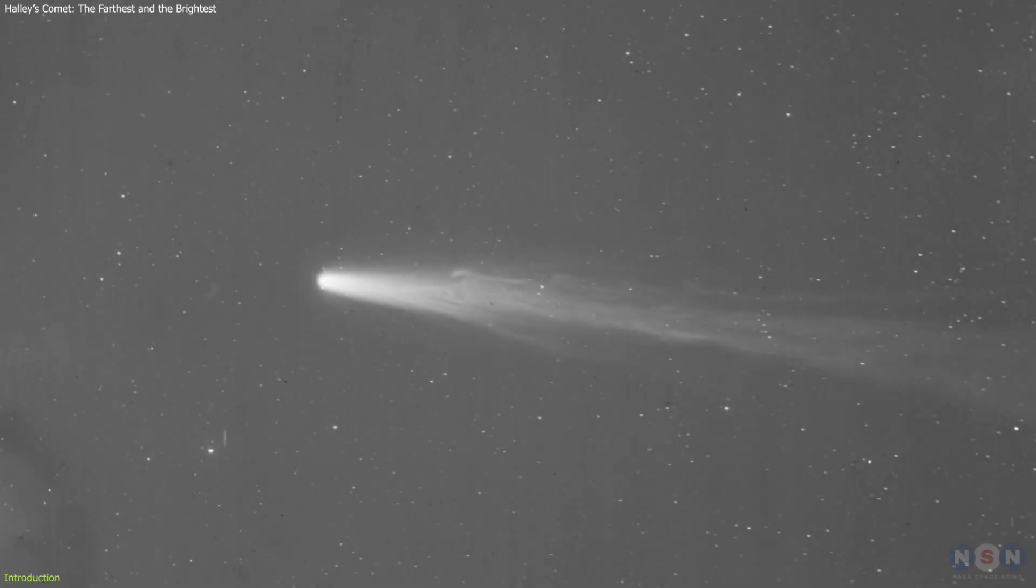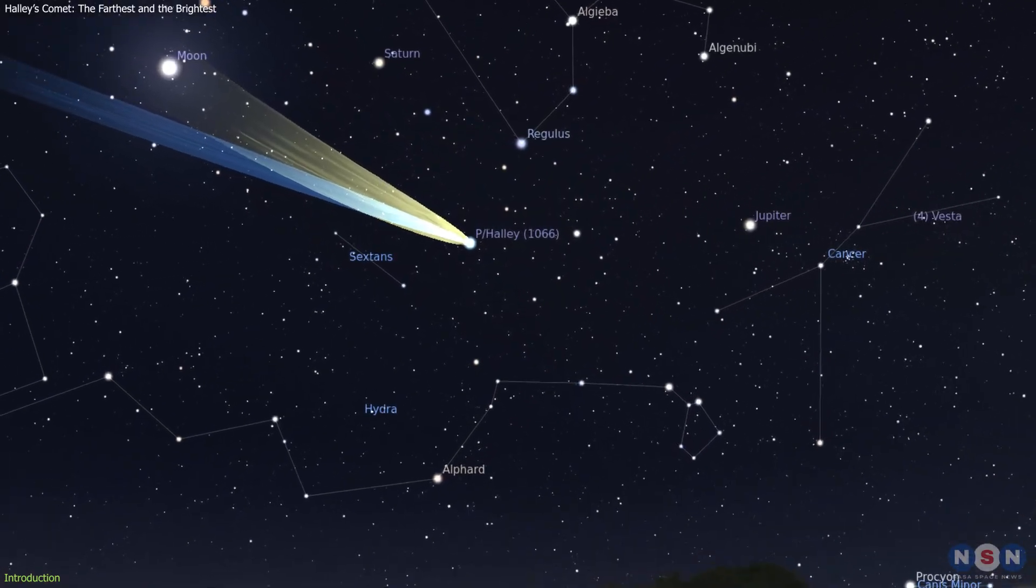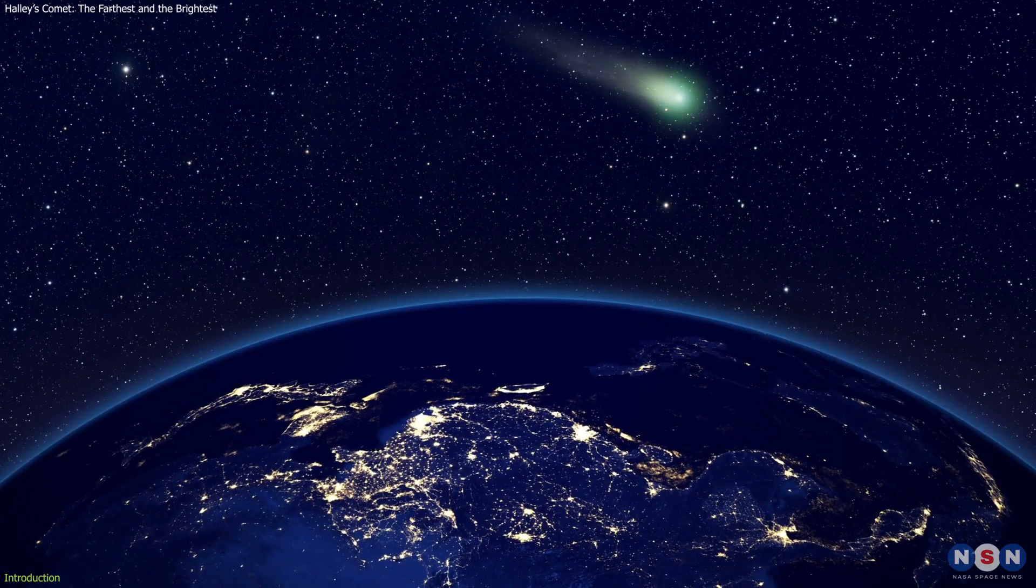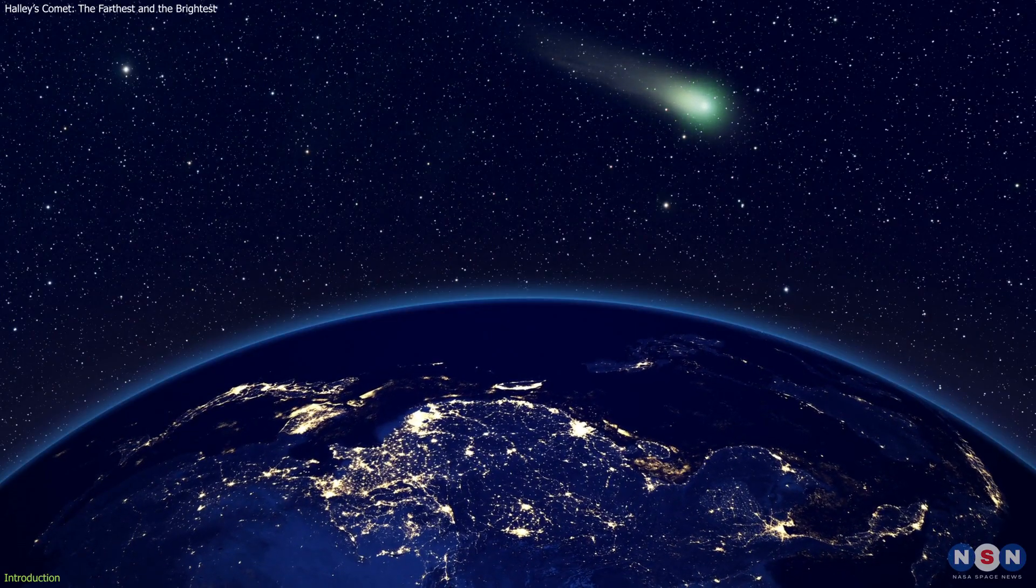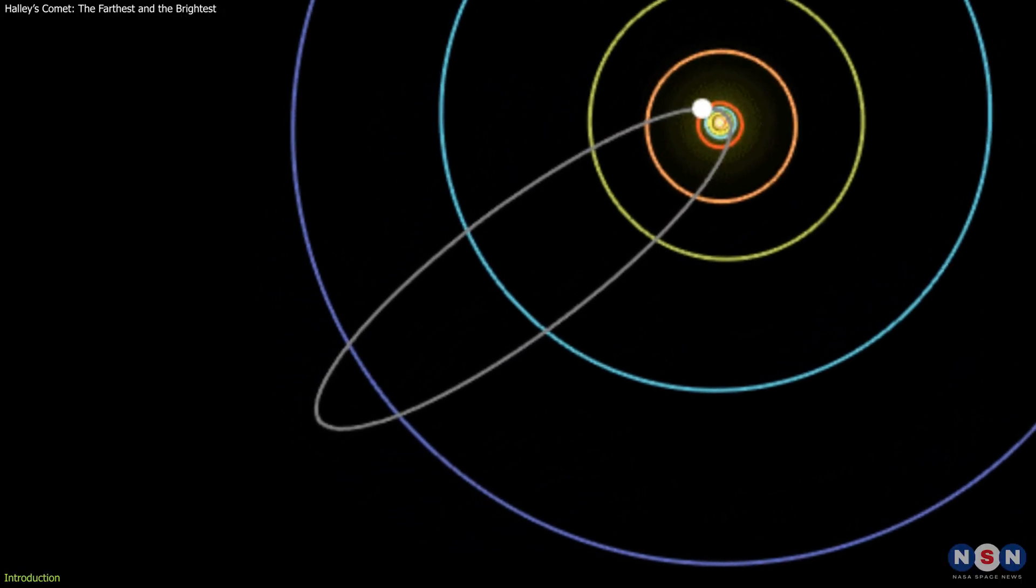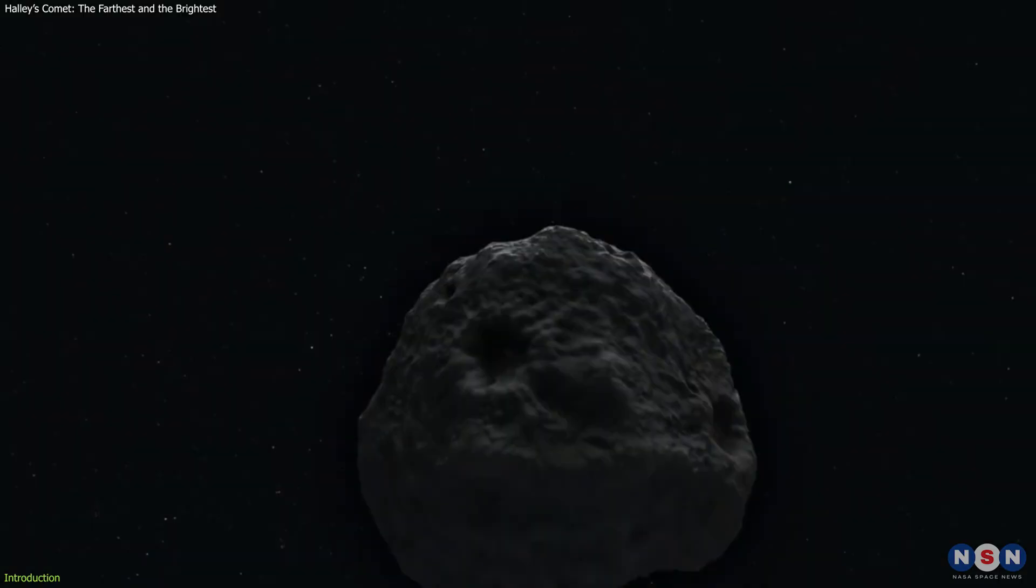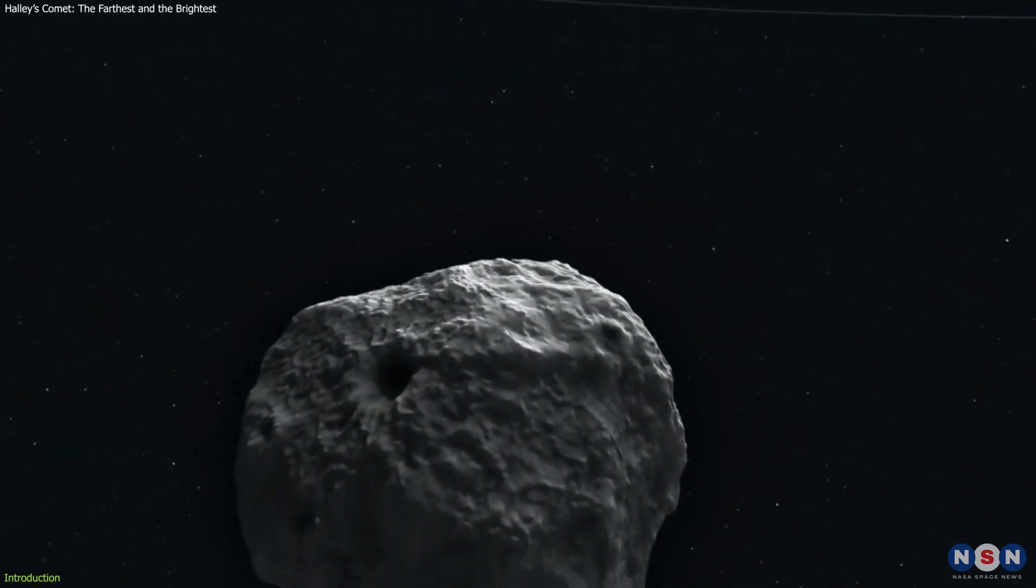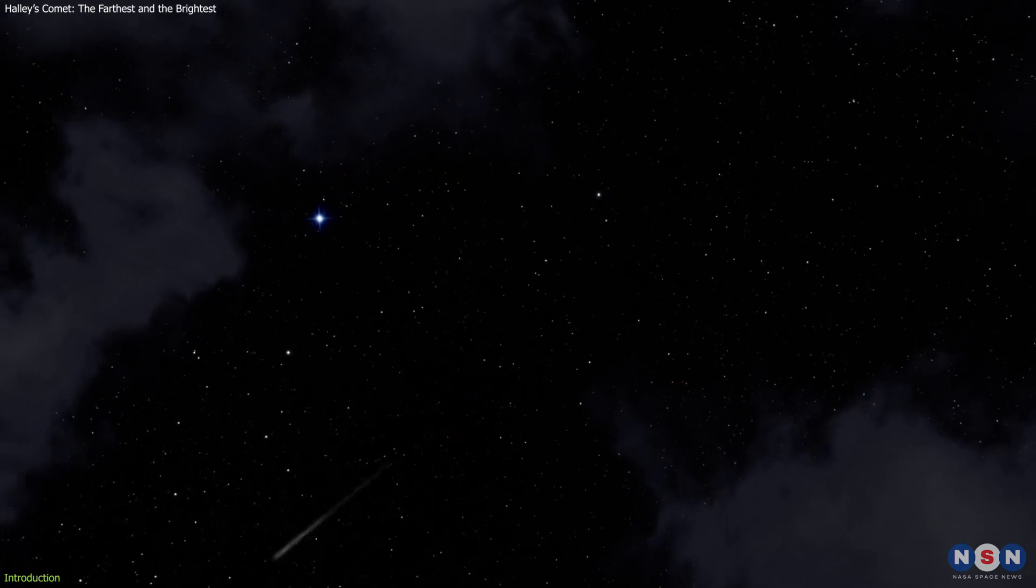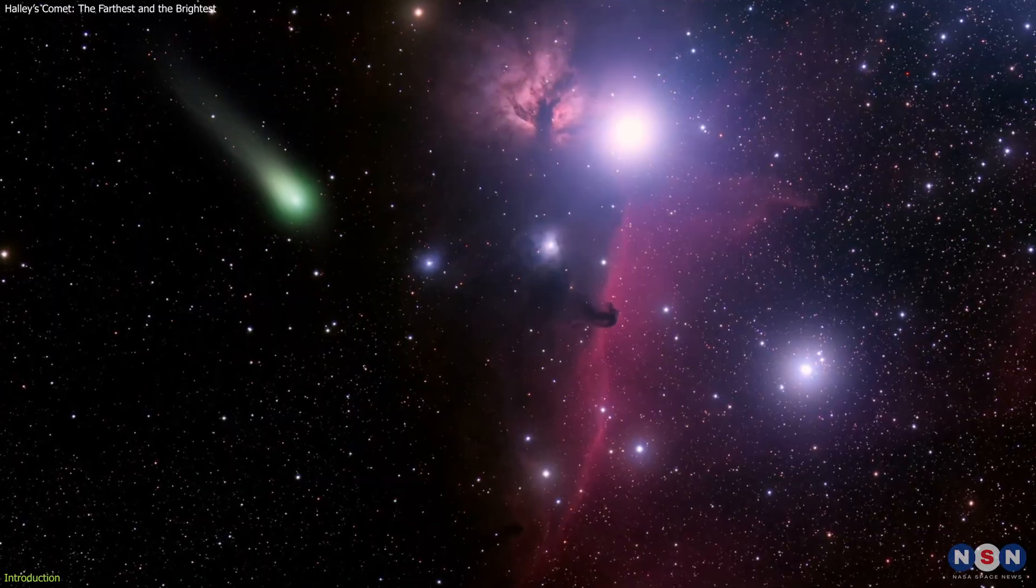Halley's Comet is the most famous comet in history, a celestial visitor that has fascinated and inspired humans for thousands of years. It is also the only comet that can be seen from Earth twice in a human lifetime. But did you know that this weekend, Halley's Comet will reach the farthest point from the sun in its orbit, called aphelion? What does this mean for the comet and for us? How can we still see its debris every year in the form of meteor showers? And what are the secrets and mysteries that this comet holds for astronomers and scientists?